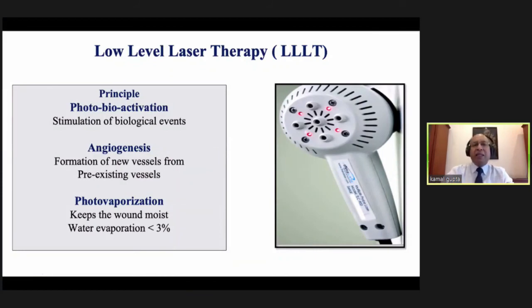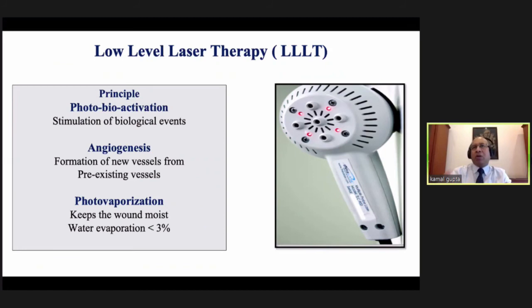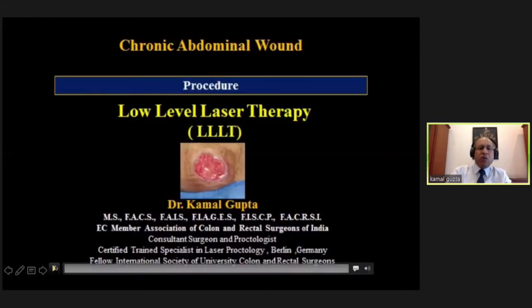Coming to the next modality — triple LT, low-level laser therapy used in routine. The principle is photobioactivation: ROS (reactive oxygen species) modulation, angiogenesis (promotion of new blood vessel formation), and photo vaporization. For wound healing, wavelength is 905 nanometers (compared to 1470 nm used in proctology or varicose veins). Vaporization from the wound is less than 3%, so the wound stays moist. Energy used is 5 joules per square centimeter, applied at each point for approximately 3 minutes, depending on wound size.